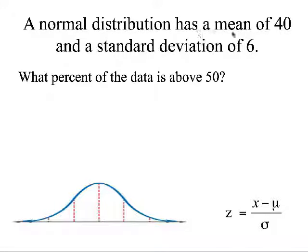A normal distribution has a mean of 40 and a standard deviation of 6. What percent of the data is above 50? Well, let's first start by drawing a picture of what this is saying. So, 40 is in the middle. If we have a standard deviation of 6, it would be 46 there, and this would be 52.